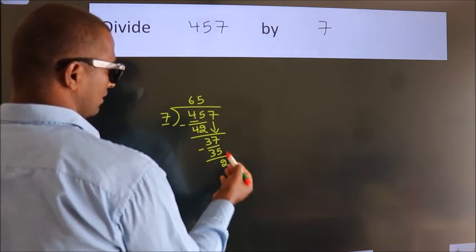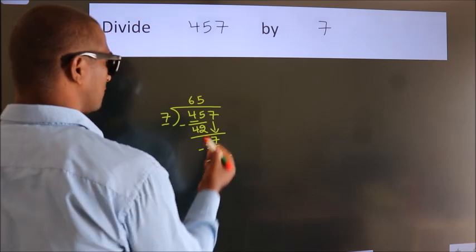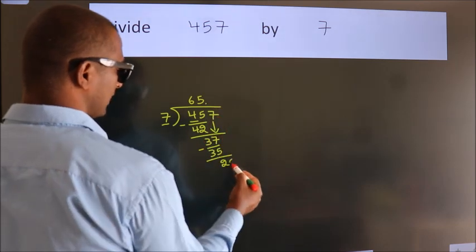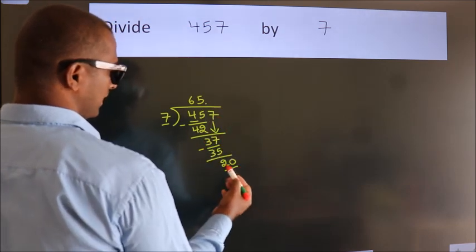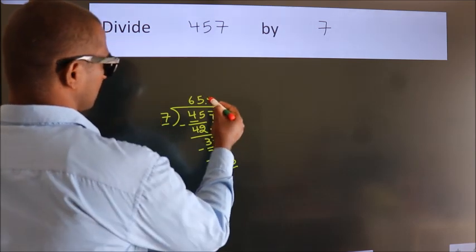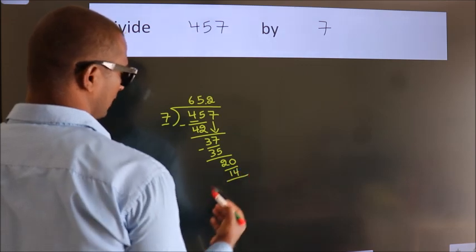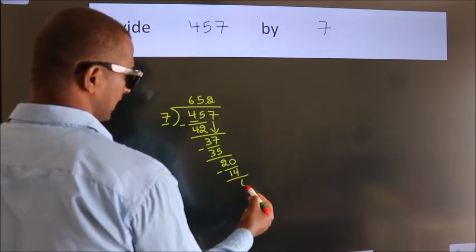After this, no more numbers to bring down. So what we do is, we put a dot and take 0, making 20. A number close to 20 in the 7 table is 7 times 2, which is 14. Now we subtract. We get 6.